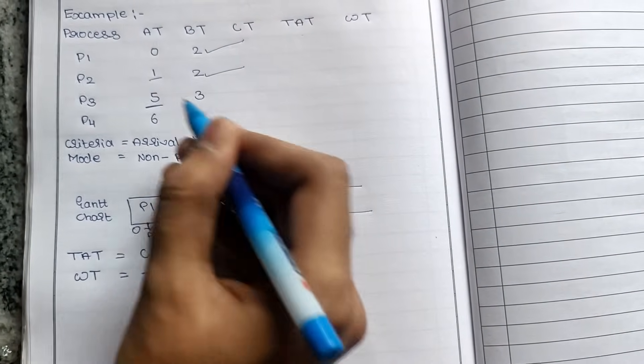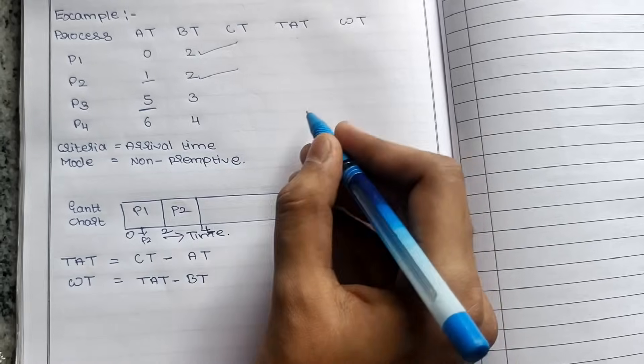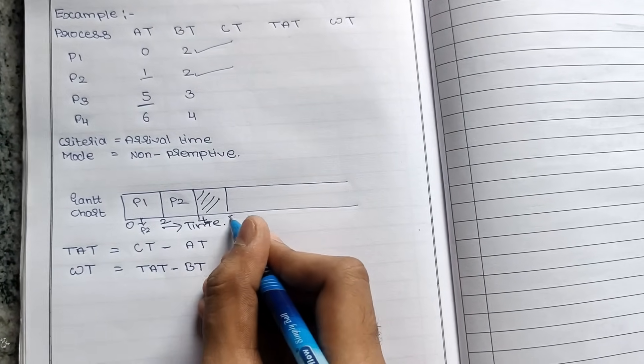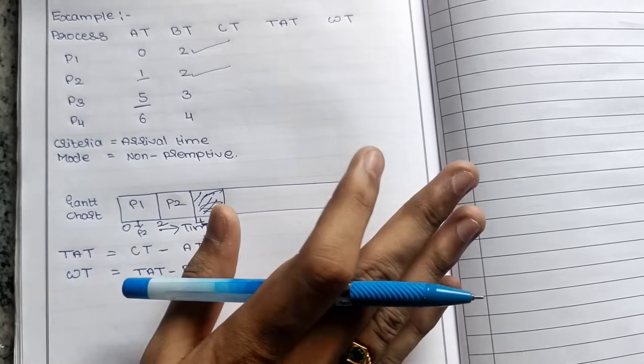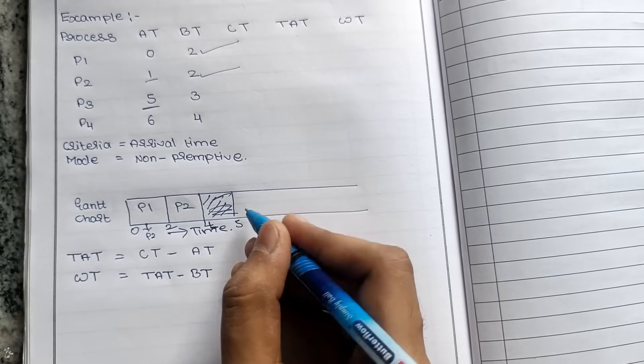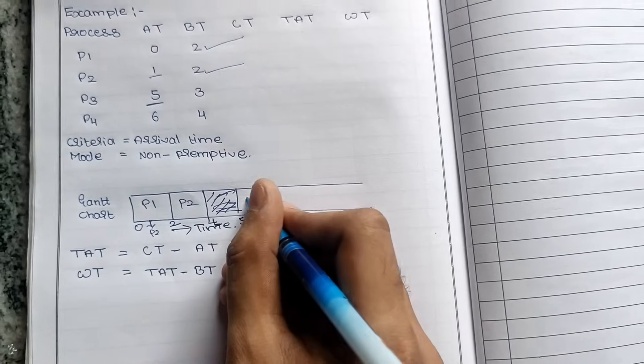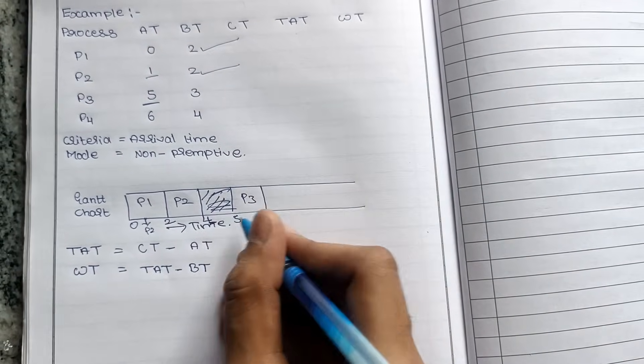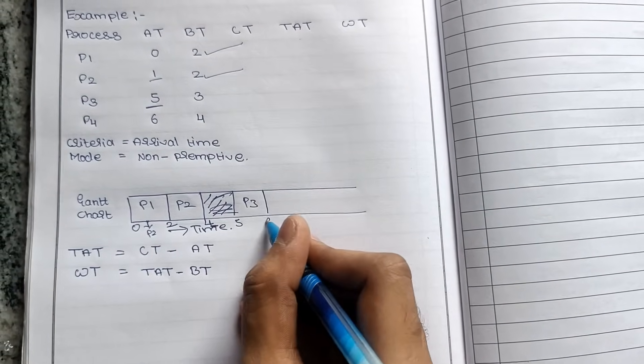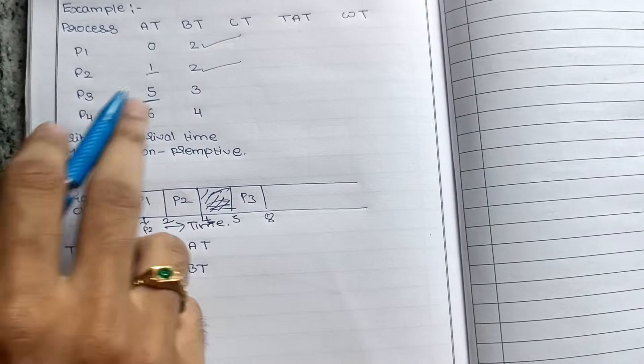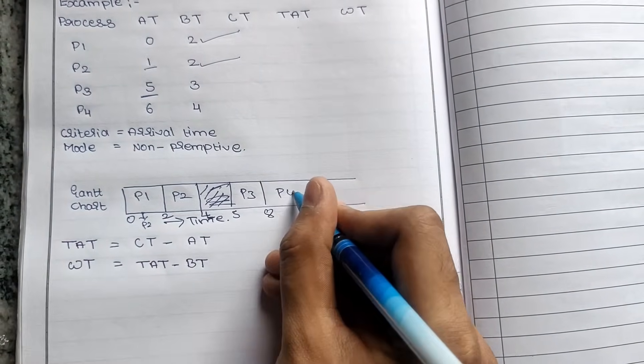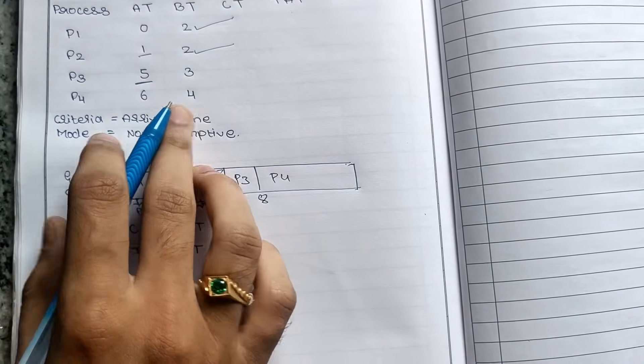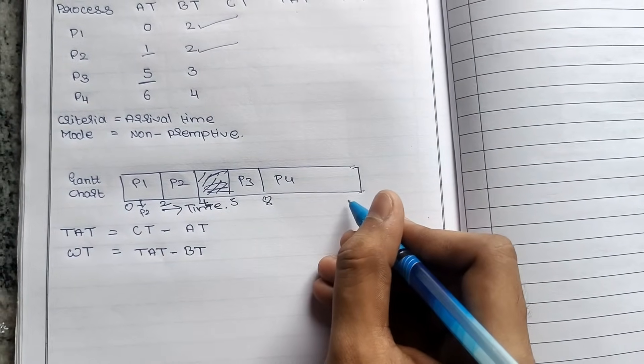Next is 4. Next is P3 which arrives at time 5, so there is no ideal time where CPU does nothing. At time 5, P3 arrives and I assign P3. Next, burst time is 3, so 5 plus 3 equals 8. The job is complete. Then the remaining process is P4. Next, process 4 has burst time 4. Next is 8 plus 4 equals 12.